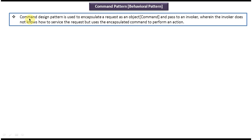The Command design pattern is used to encapsulate a request as an object — the object is called the command object — and pass it to an invoker, wherein the invoker doesn't know how to service the request but uses the encapsulated command to perform an action.